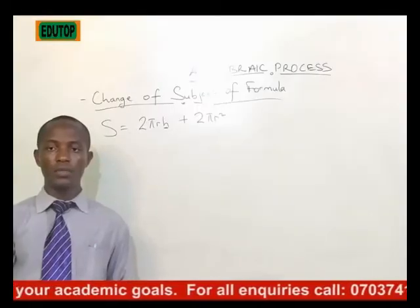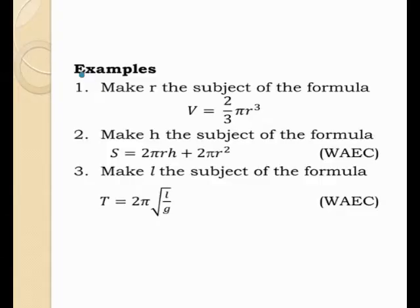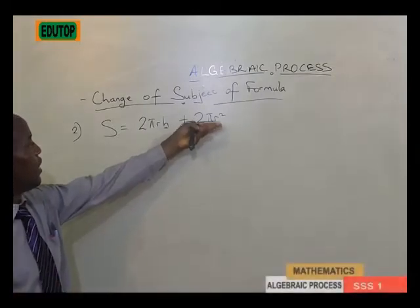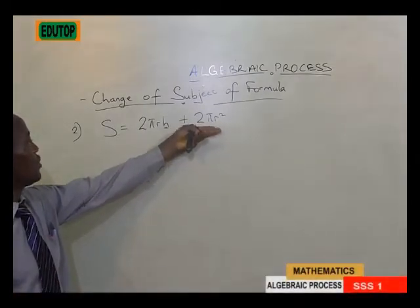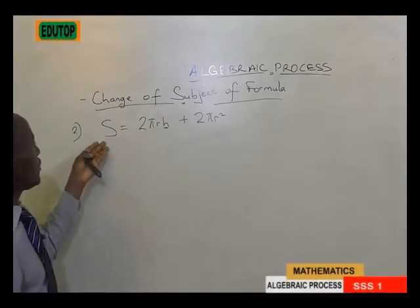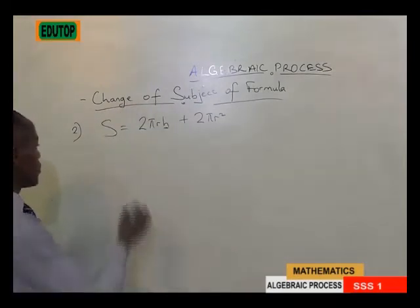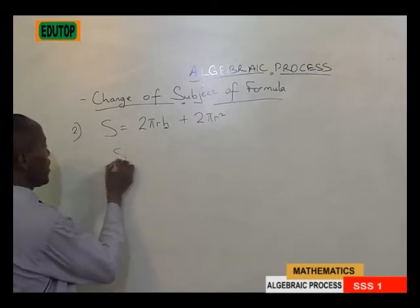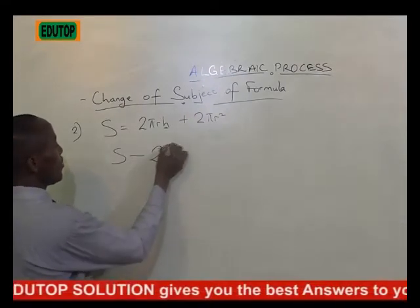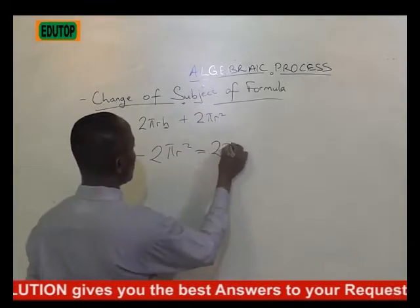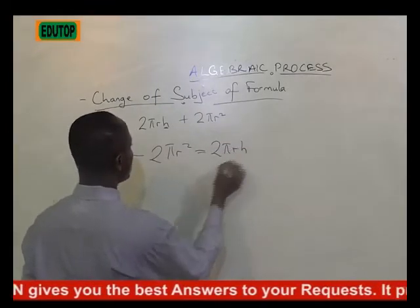Our second example is to make H the subject of the formula from the given equation. What we are going to do is bring part of the equation to the other side, making it across and equal to the rest. So that would be S minus 2 pi R squared is equal to 2 pi R H.